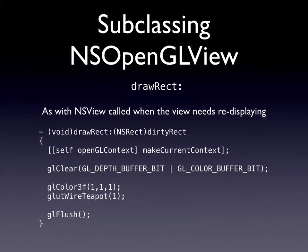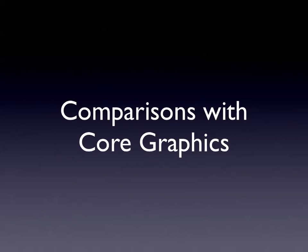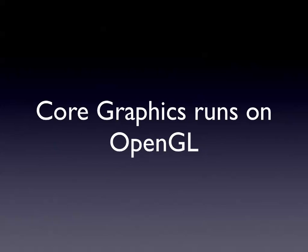DrawRect: set up current context, clear the buffer, call glutWireTeapot - an external function from GLUT utility library that draws a teapot. Core graphics comparison: core graphics runs on OpenGL. Basically anything you can do in core graphics, you can do in OpenGL if you're hardcore enough. Core graphics works with sprites and rectangles that can be moved and manipulated.